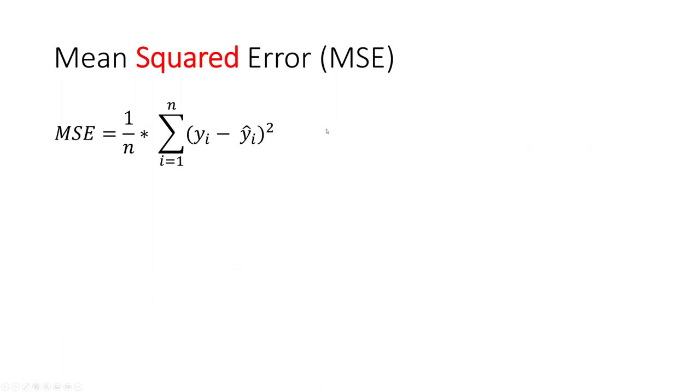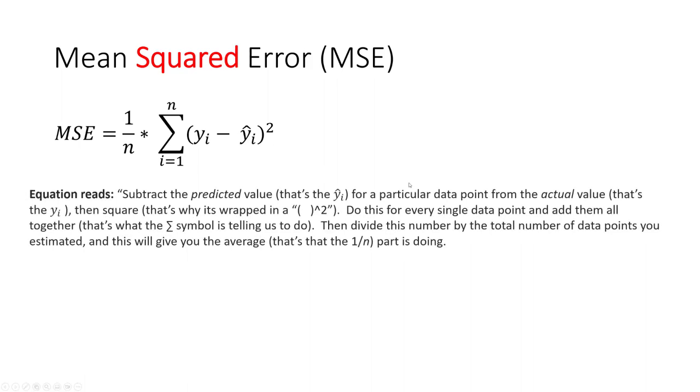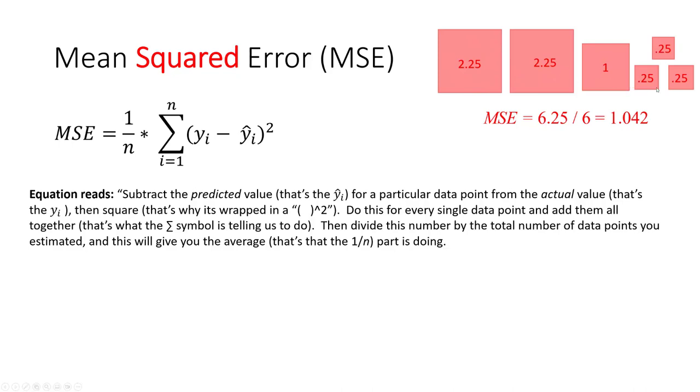The other option is the mean squared error. Exact same idea, but now we're using those squares that we talked about earlier. Quite literally, we just sum up the values of each one of these squares, then we divide by the number of observations. In the example, we only had six, so the mean squared error is 1.042. We want the mean squared error to be relatively low. The lower it is, the more superior the model is at depicting or predicting where the data is.